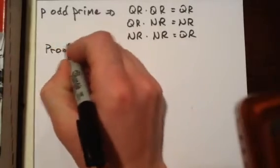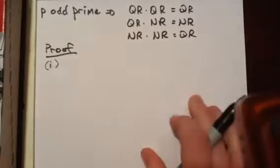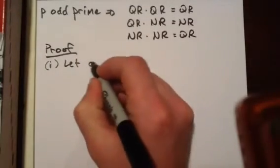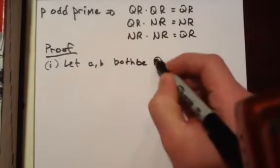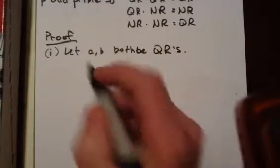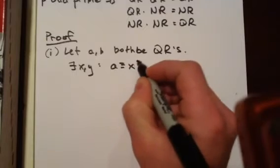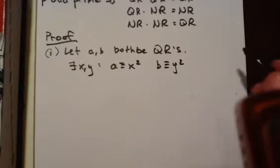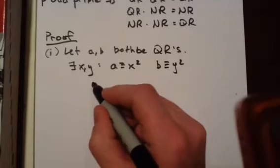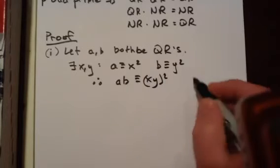So let's go ahead and prove this. For the first one, let A and B both be quadratic residues. Then exists X, Y such that A is congruent to X squared and B is congruent to Y squared mod P. Therefore AB is congruent to XY squared. And so therefore AB is a quadratic residue by definition.